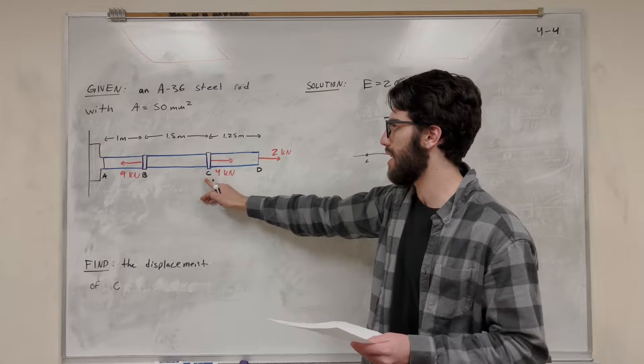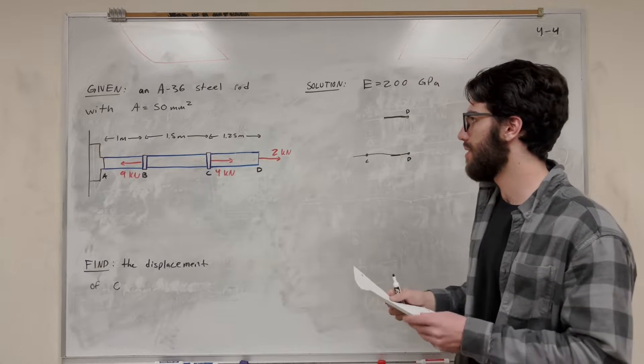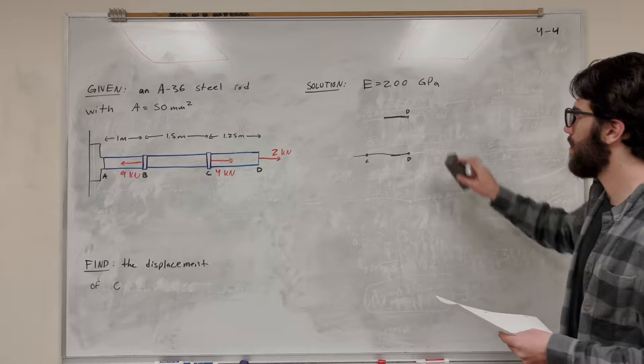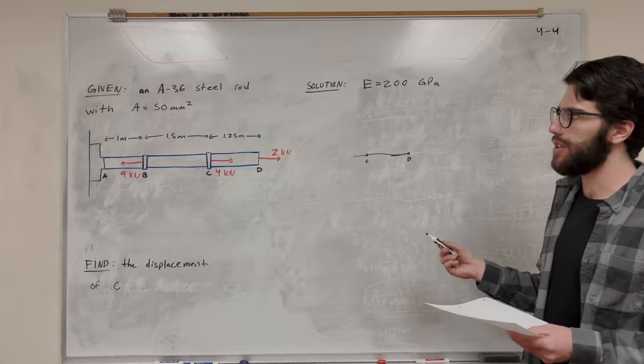So we can basically ignore all of this point D to the right. So let's go ahead and find that. So I left that over too much, but what's our equation for this? Displacement is equal to PL over AE.